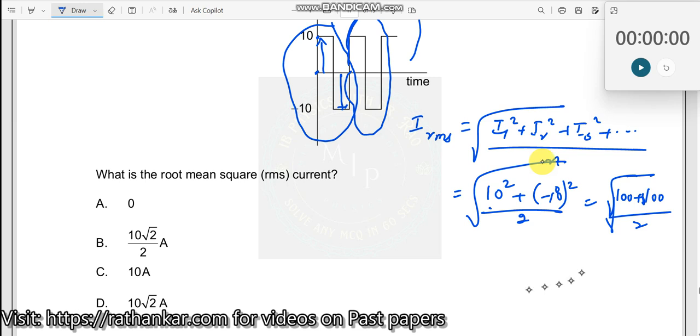So, therefore, this should now be equal to square root of 200 by 2, which is equal to root 100, which should be equal to 10. So the answer is 10 amperes.